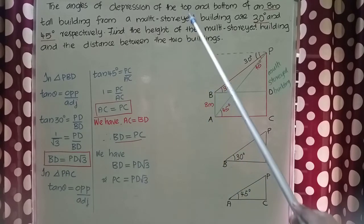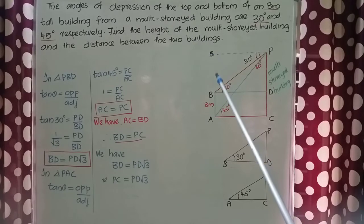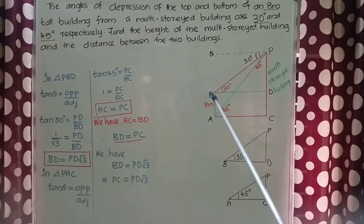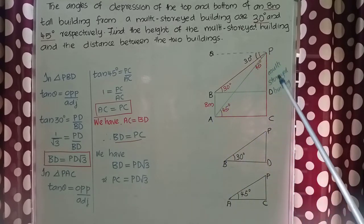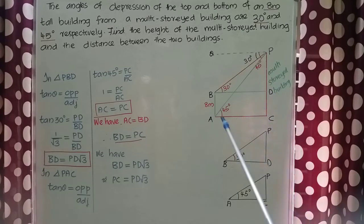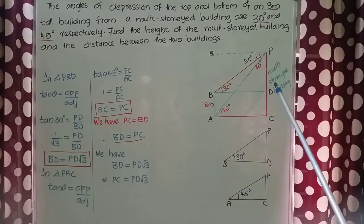In the question, it is saying there are two buildings — a building with height 8 meters and another one, a multi-storied building. In the figure, BA is the 8 meter tall building and PC is the multi-storied building.